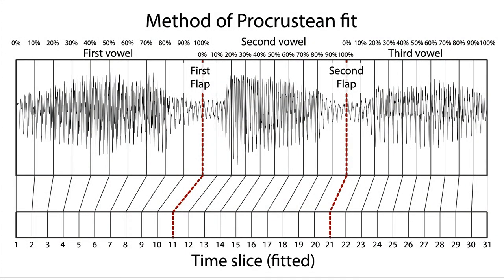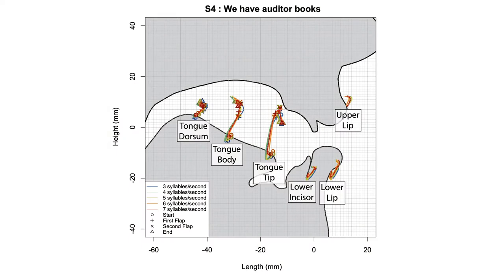Turning our data into something we could understand was quite the task. First, we had to take our audio recordings and mark the start and end of each relevant word. Then we identified the center of each flap by finding the points of lowest acoustic amplitude. We then broke up the timing into 31 time slices and used tongue position information from those points for every piece of analysis to follow. That way, regardless of actual speech rate, we could compare the relative timings of tongue position visually, the way you see in these images of the human vocal tract here. You can see here examples of speakers who do not change their tongue position patterns much for the same word no matter how slowly or quickly you ask them to speak — the blue lines overlap the red pretty well.